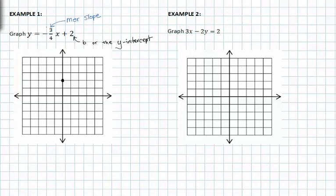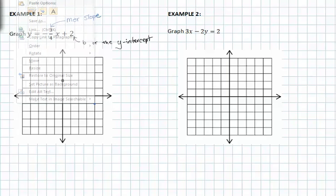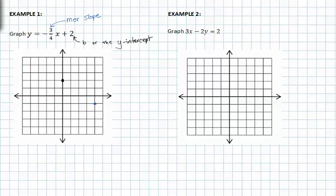We can pick our rise to be negative, so we'll count our rise down three because it's negative. And then since we picked the rise to be negative, our run has to be positive to create a negative slope. So now we have found two points that we can connect and create a line.